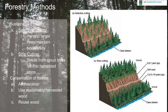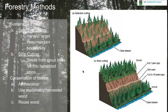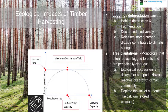Strip cutting helps maintain diversity and keeps runoff and erosion under control — you can see clear streams in these situations. Other conservation methods include afforestation, replanting trees in areas intentionally, using sustainably harvested wood, and reusing wood materials. These all reduce our demand for timber so that we have to harvest less often.